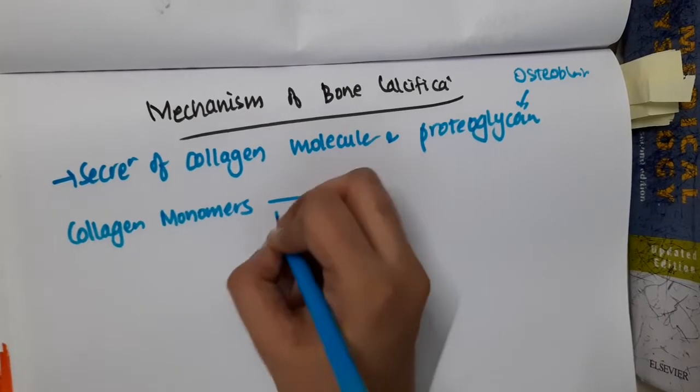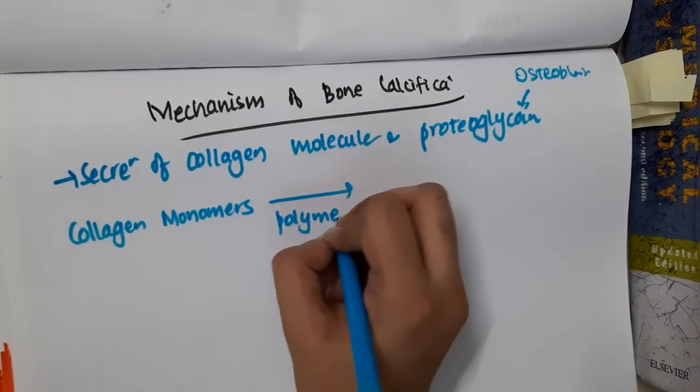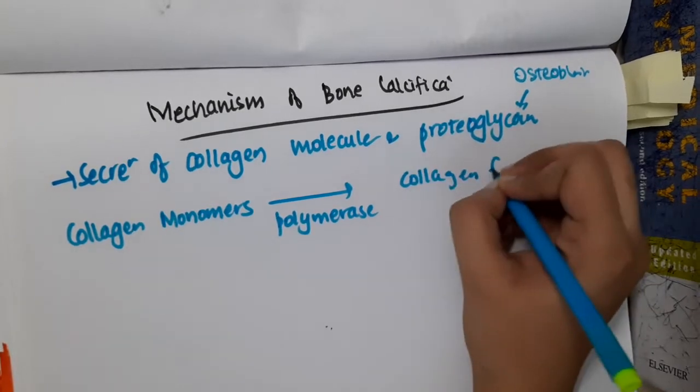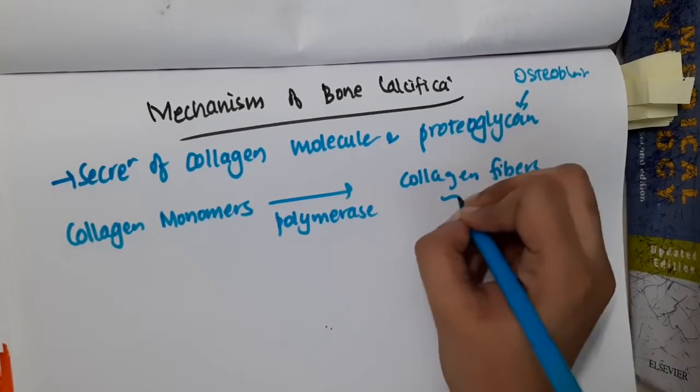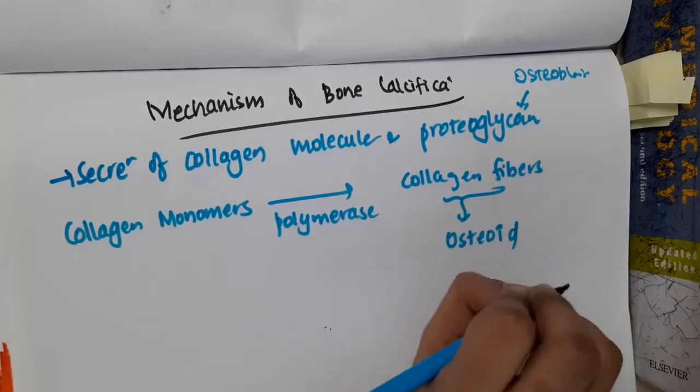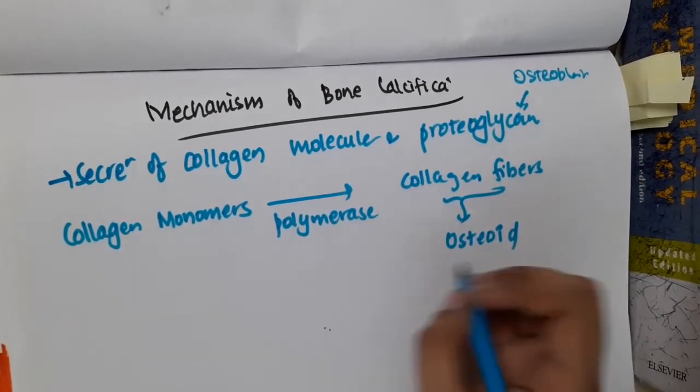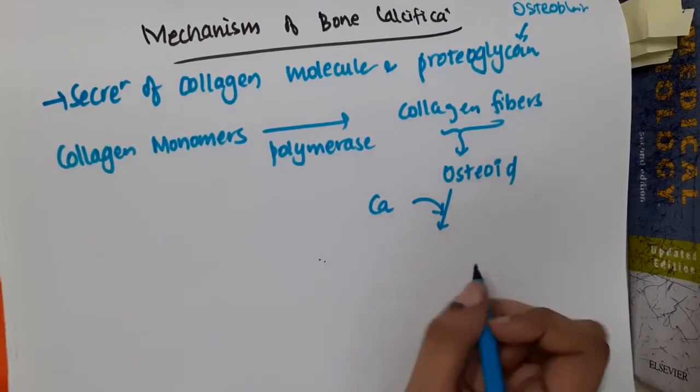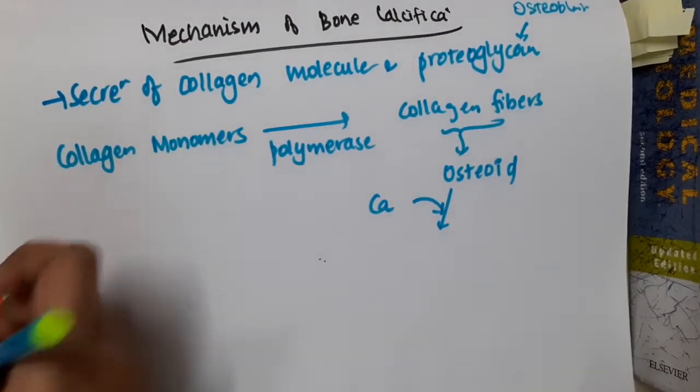They polymerize and form collagen fibers, which results in formation of osteoid. After osteoid formation, calcium will deposit into the osteoid. This calcium will make it hard.